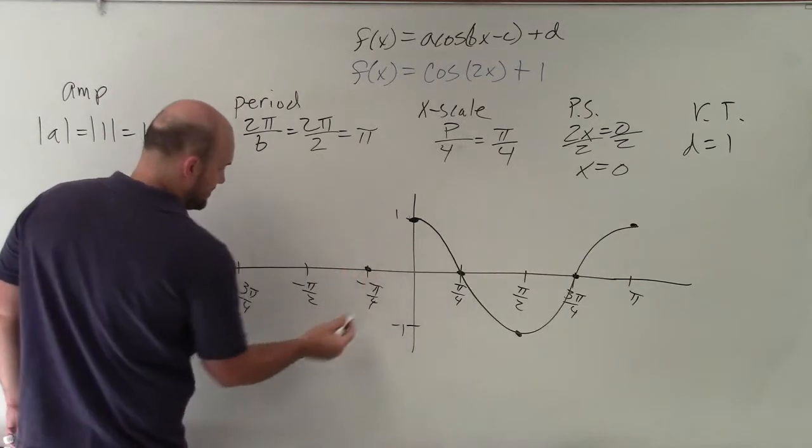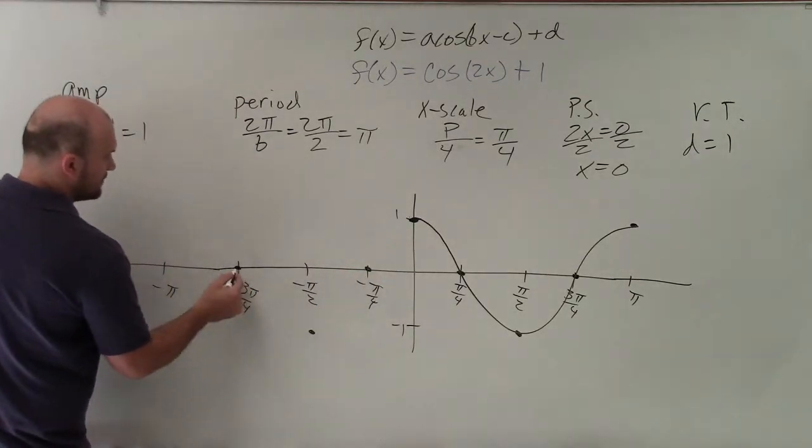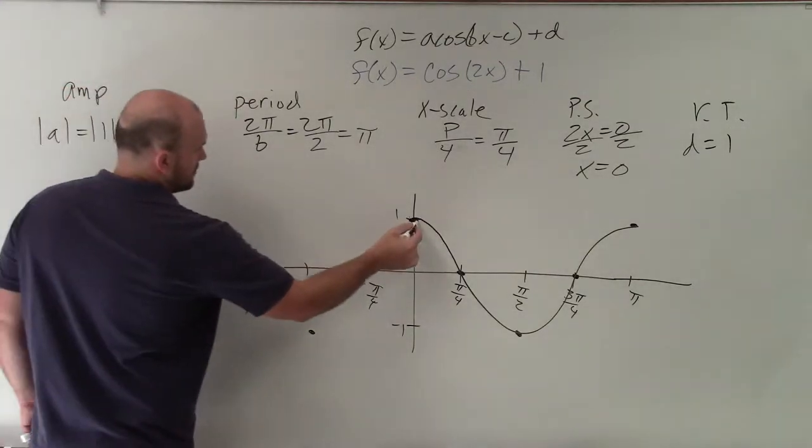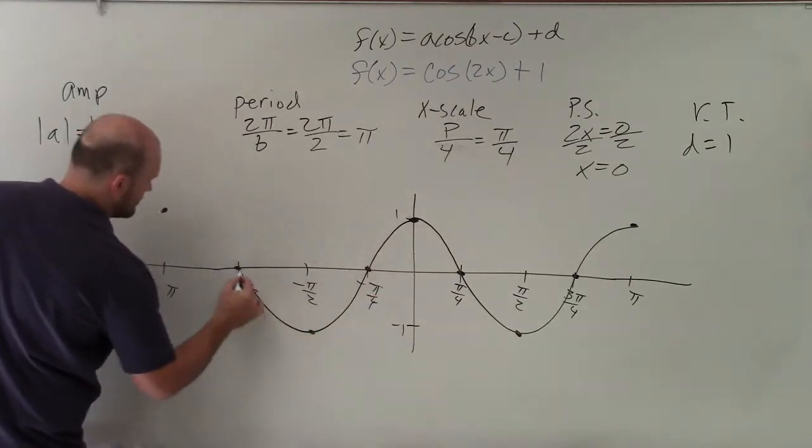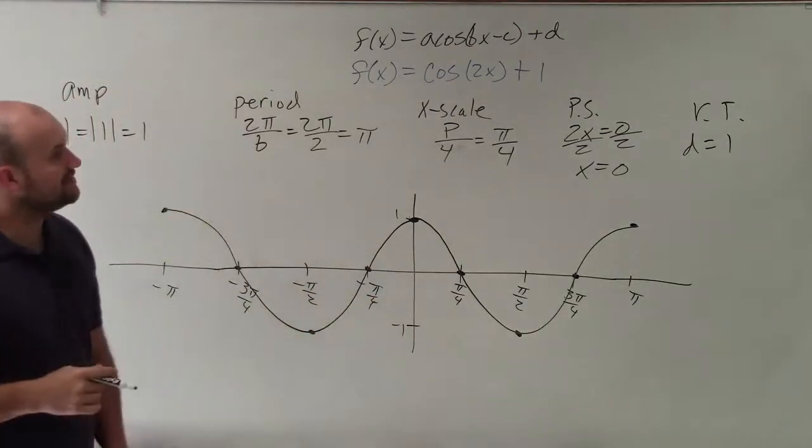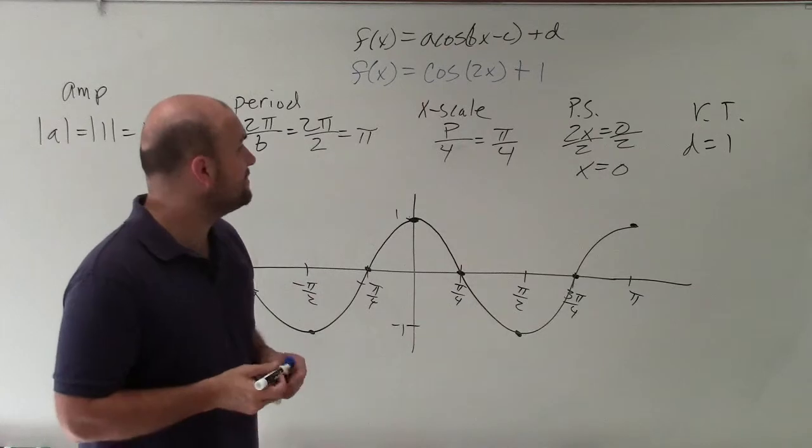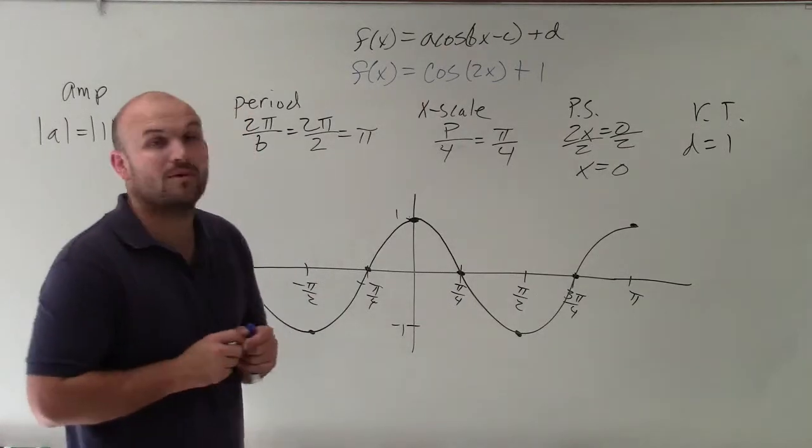And then I can just follow that in the other direction as well. And there you go, ladies and gentlemen. That is how you graph f of x equals cosine of 2x plus 1. Thanks.